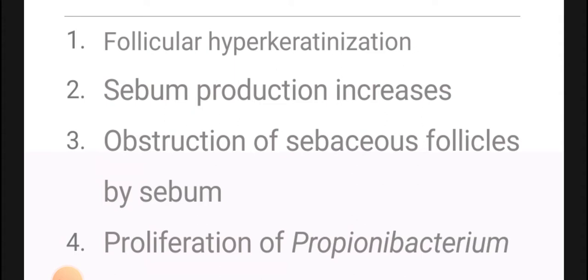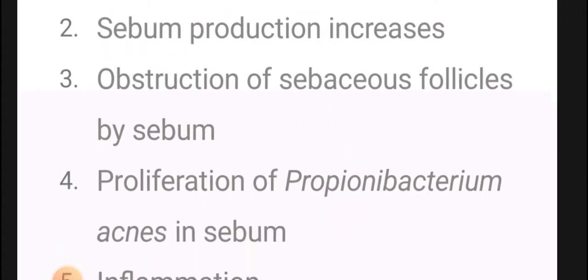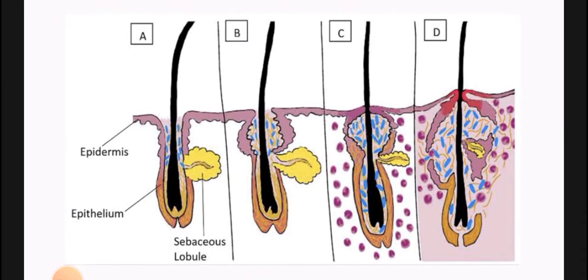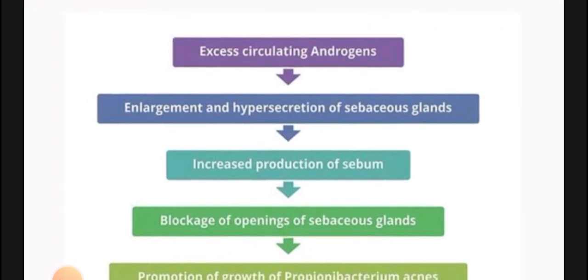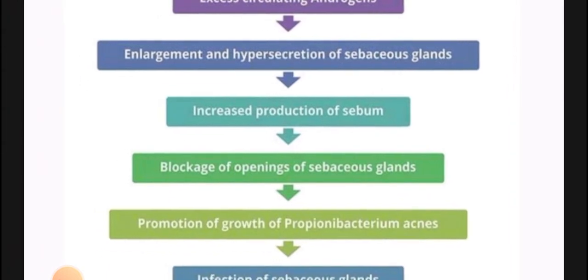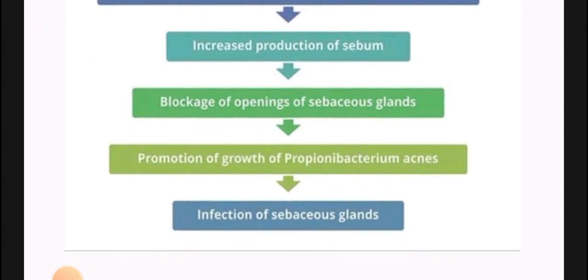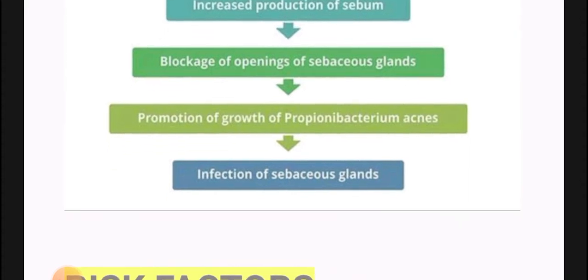The sebaceous glands produce excess sebum, causing obstruction of follicles. When obstruction occurs, a bacteria starts to proliferate — which is Propionibacterium acnes. Then inflammation starts. The epidermis is there, and inside the dermis the sebaceous gland produces excess sebum, ultimately bacteria form and cause inflammation. So excess circulating androgens cause enlargement and hypersecretion of sebaceous glands, more sebum is produced, openings/ducts get blocked, and Propionibacterium acnes grows — promoting infection.